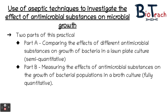Part B looks at measuring the effects of antimicrobial substances on the growth of bacterial populations, and that's a fully quantitative method. This part will allow you to develop your serial dilution techniques, enable you to grow bacteria at very low concentrations, and you should be able to make this with good precision. This will allow you to count the bacterial colonies easily and then do the calculations that could potentially come up in an exam.